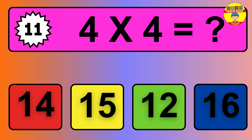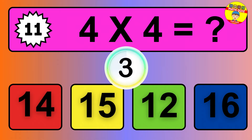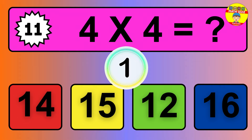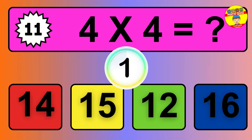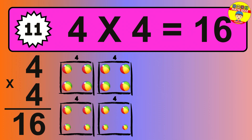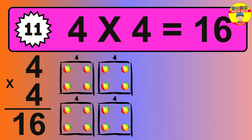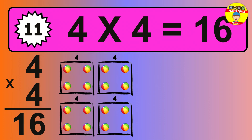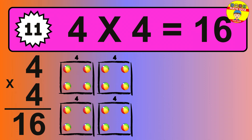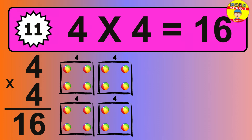Question 11. 4 times 4 equals what? The answer is 4 times 4 is 16. To calculate, we have 4 groups with 4 balls each one. So how many balls do we have? 16 balls.